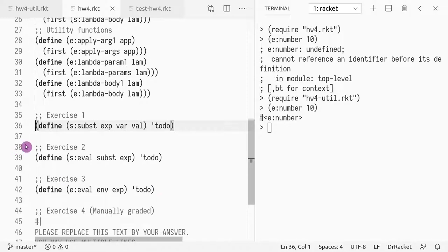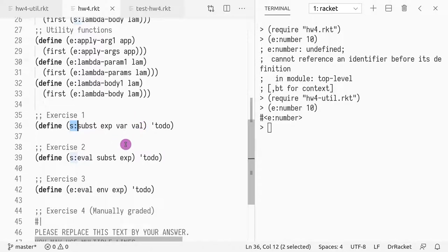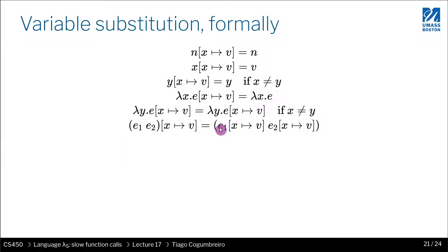The first exercise is to implement the substitution function of lambda S, which is why you have the S colon prefix in the function. We have three parameters: the expression that we want to find and replace, var which is the variable we want to find, and val which is the value we want to replace. This is the function you are expected to implement.